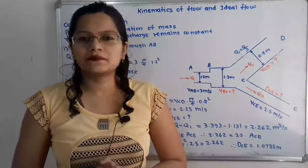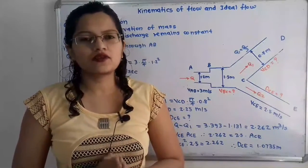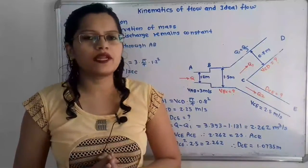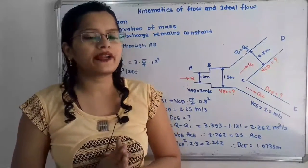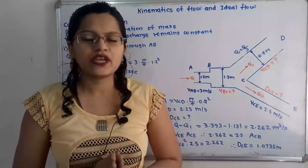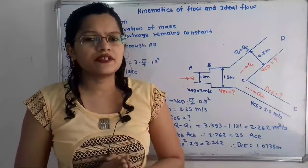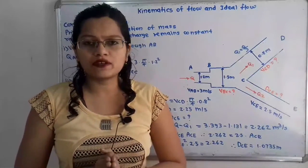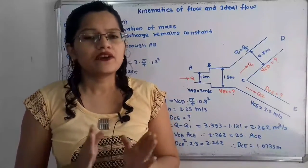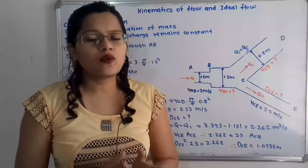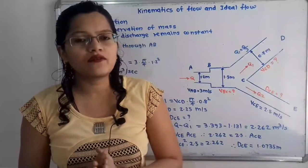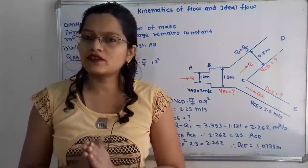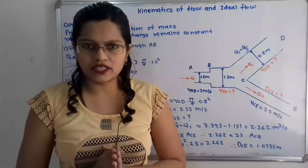Hello friends, this is Priyanka. Today we are going to solve a problem on kinematics of flow and ideal flow. In this video we are going to find out what is the diameter of pipe, velocity in pipe, and volume rate of flow of the pipe having different cross section area.